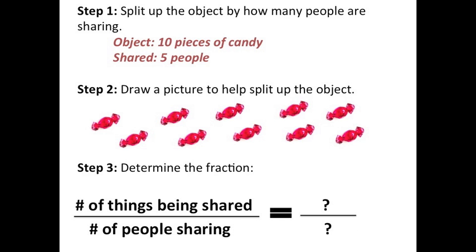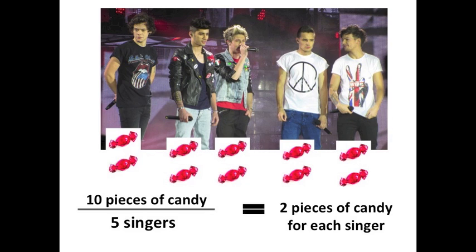Let's see how you did. Step one is to split the object that is being shared — in this case the candy — by the number of people sharing it. Ten pieces of candy are being shared by five people. Step two, did you draw a picture to help you see how much candy each singer should get? And in step three, we want to determine the fraction that shows how much each person will get. I'm dividing the ten pieces of candy by the five singers, so you should end up with a fraction of ten over five, or ten divided by five. Each singer gets two pieces of candy.